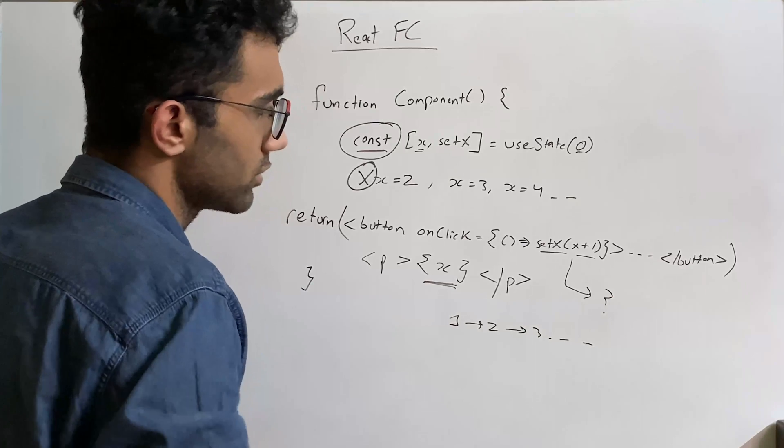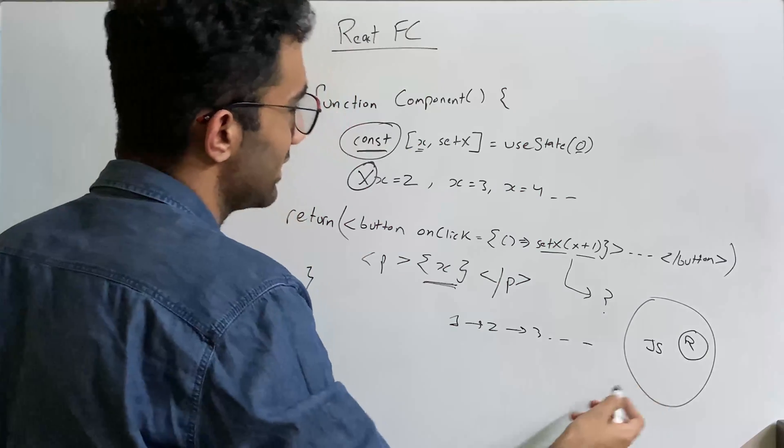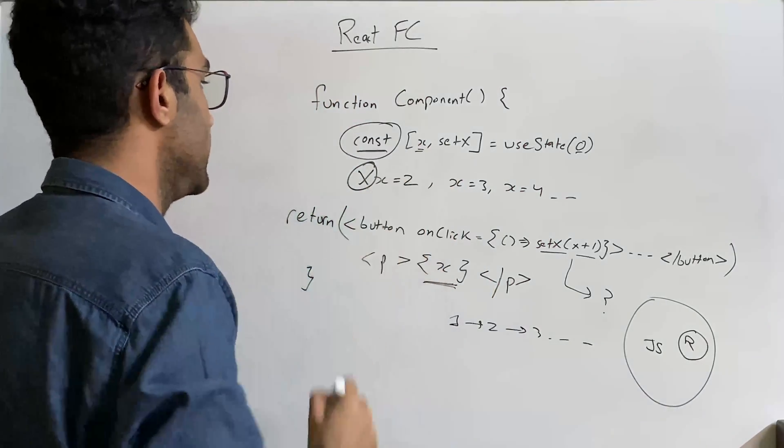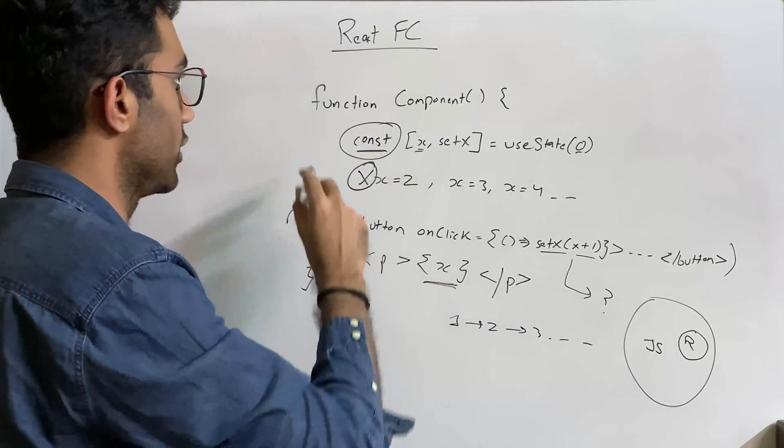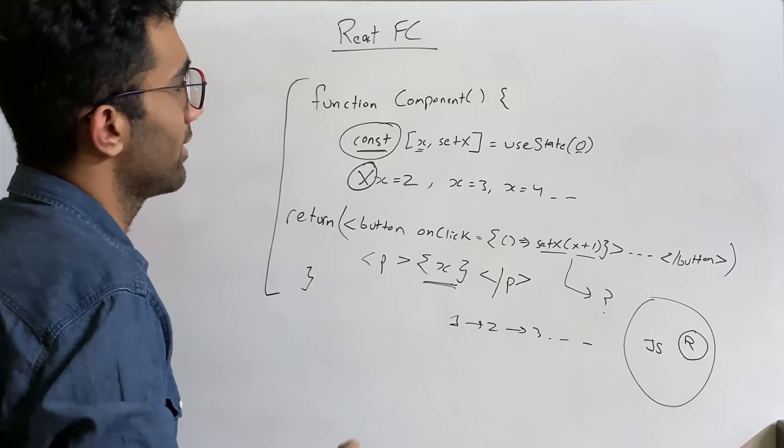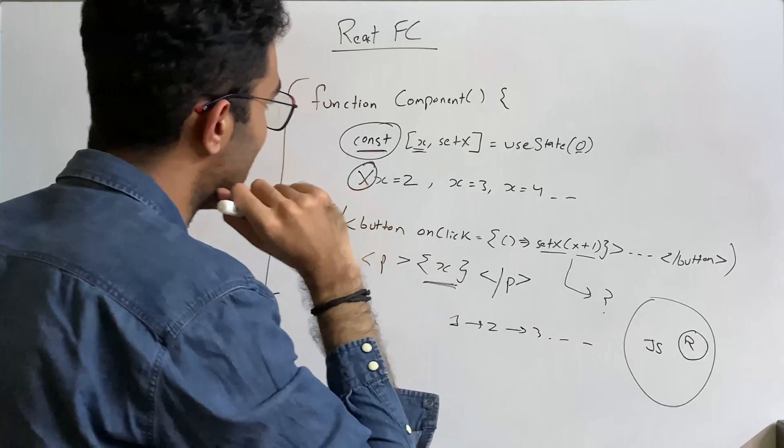That means this x cannot change value and sure enough we don't even do that ourselves but does React internally? Can it do that? Well of course not because React is part of JavaScript. This is JavaScript, this is React. So obviously it cannot break the rules of JavaScript itself. So what React actually do in this case when you're using a functional component is that it calls this function again but with a new x value.